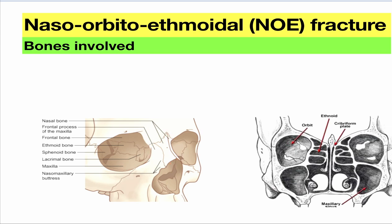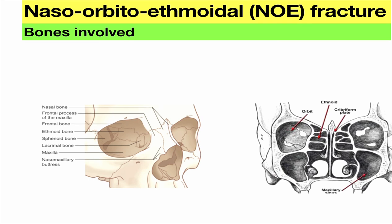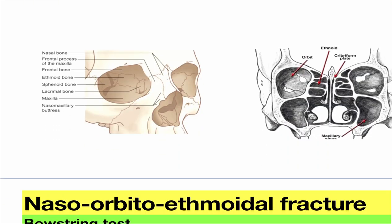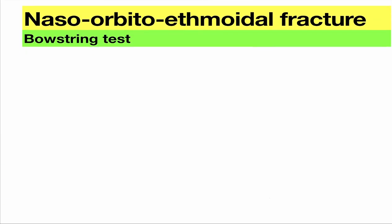This is very important to understand — this area, naso-orbito-ethmoidal bone. This is the area where you get the fracture. We will understand the classification also in this particular session.